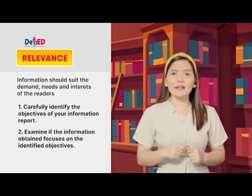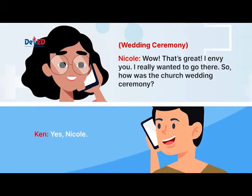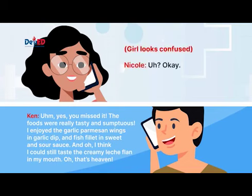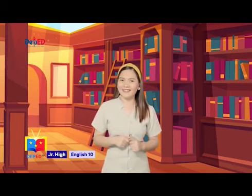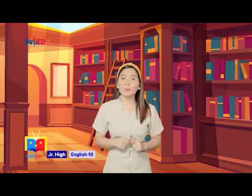Listen to the conversation between Ken and Nicole. Nicole: 'Hi Ken, I have heard that you attended Jonah's wedding. Is that true?' Ken: 'Yes, Nicole.' Nicole: 'Wow, that's great! I really wanted to go there. How was the church wedding ceremony?' Ken: 'The foods were really tasty and sumptuous. I enjoyed the garlic parmesan wings in garlic dip and fish fillet in sweet and sour sauce. I think I could still taste the creamy leche flan in my mouth.' Notice how clueless and confused Nicole was when she heard Ken share about the foods when asked about the wedding ceremony. Information must be relevant and applicable to the situation or problem at hand, as it can help solve a problem or provide a solution.